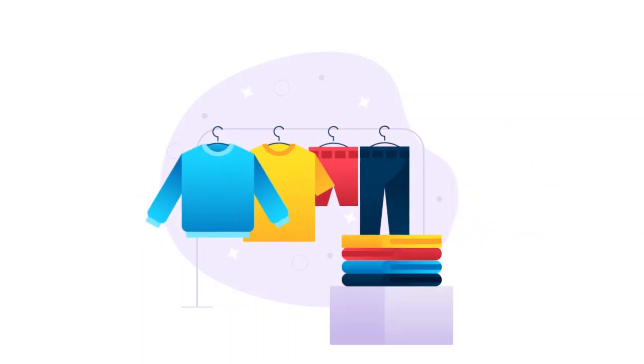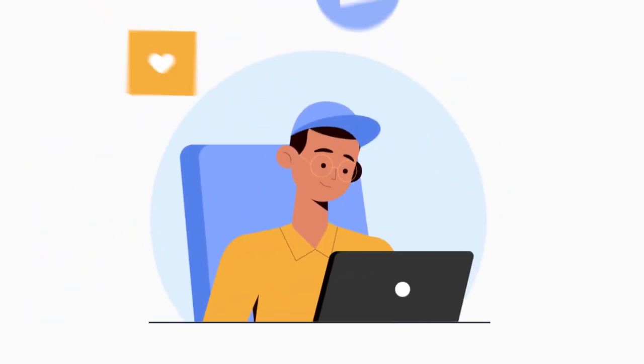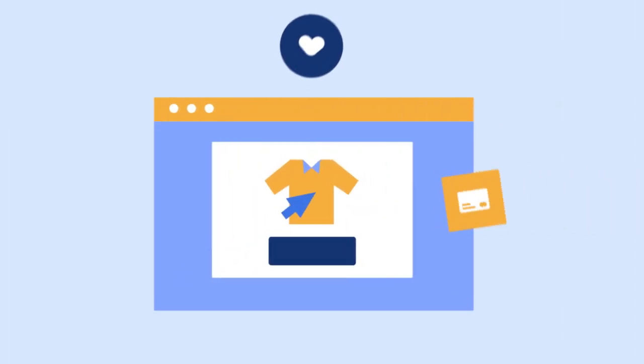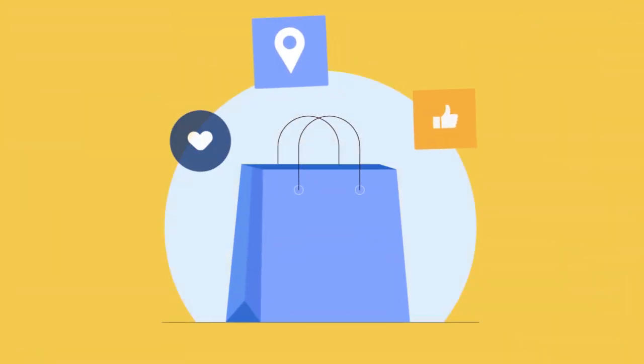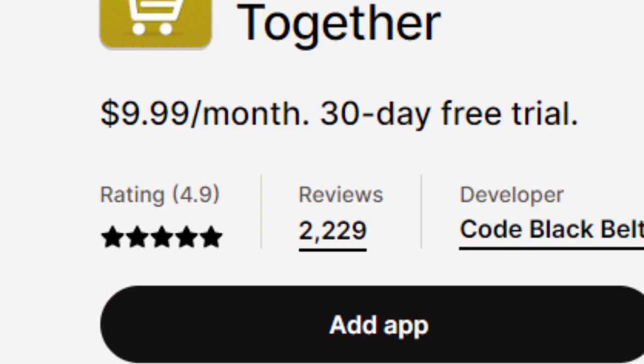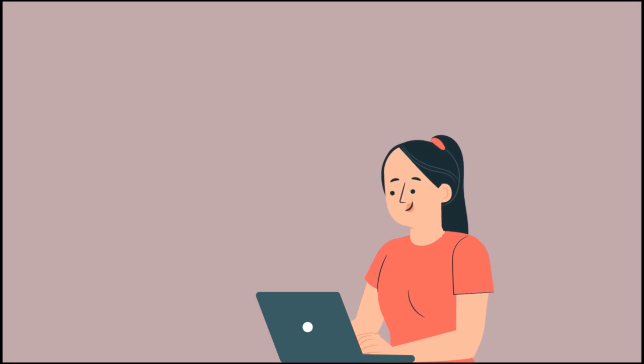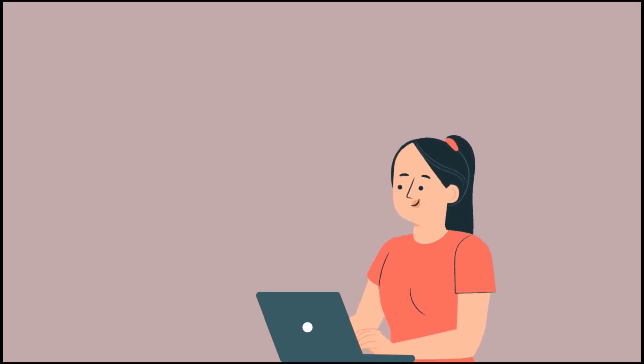The last app on my list is Frequently Bought Together. This app brings Amazon-like related product recommendations to your Shopify store and lets your customers buy related products with one click. The best uses of this app are upselling and recommending products. The app has a 4.9 star rating, 100% free for new stores, and the paid plan starts at $9.99 per month with a 30-day free trial. You can find the link to this app below this video.